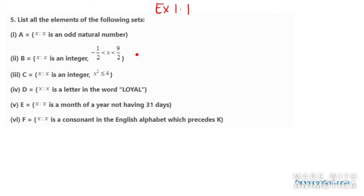Let's start with question number 5. It says list all the elements of the following sets. We now need to write all the numbers which are in this set. It says x is an odd natural number. You need to write all the natural numbers. So it starts from 1, 3, 5 and so on. You can end the bracket with so on.